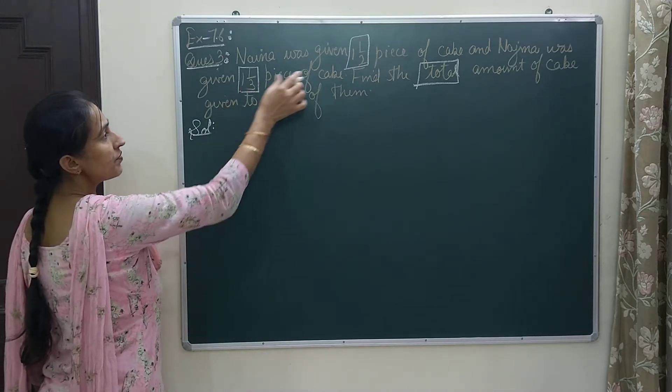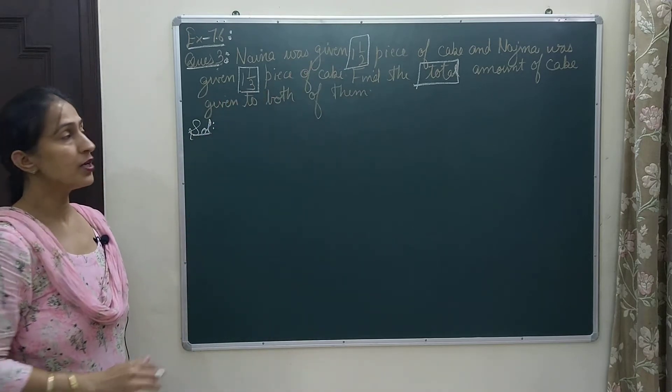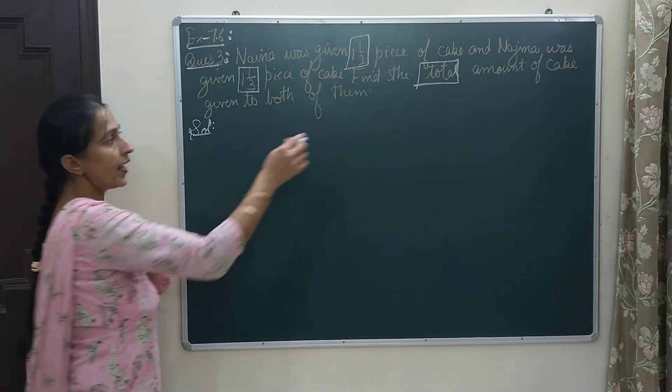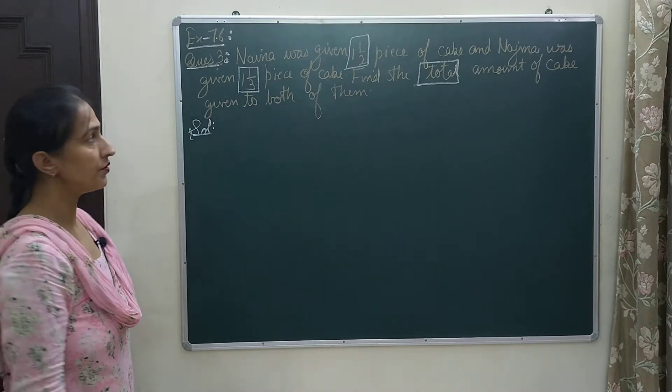First of all we will see here that the two fractions that are given here, these are mixed ones. So we will convert those and after that for total we will find the addition of both the fractions.